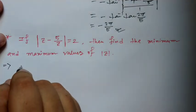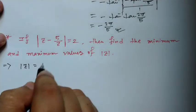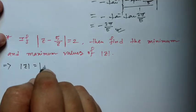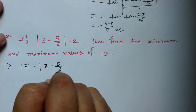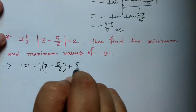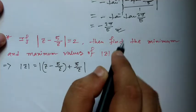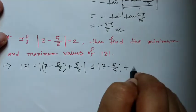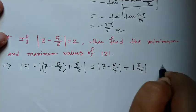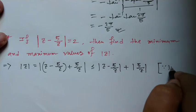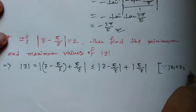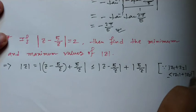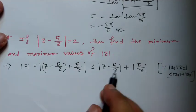We can write mod z equal to mod of (z minus 5/z) plus 5/z. This is less than or equal to mod of (z minus 5/z) plus mod of (5/z), using the triangle inequality: mod of (z1 plus z2) is always less than or equal to mod z1 plus mod z2.